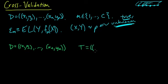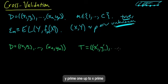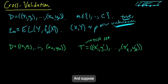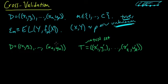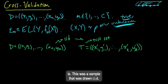And let's suppose that we also had, somehow, magically, some test set. Let's call it X prime 1, Y prime 1 up to X prime T, Y prime T. Some test set. And suppose that our data were drawn IID from this distribution P. And also the test set was drawn IID from this true distribution P.